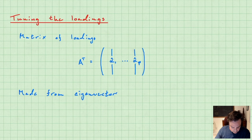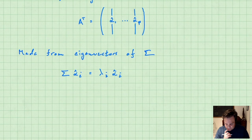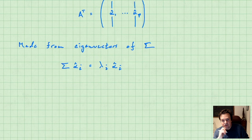Each column is an eigenvector of the covariance matrix, meaning sigma multiplied by alpha-hat-i equals a constant (the eigenvalue) times alpha-hat-i. The idea is that sometimes you might want to ignore small values of the components of the eigenvectors — that is, drop small elements in the matrix of loadings.